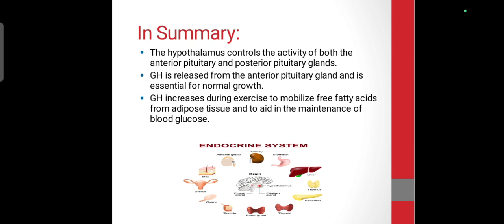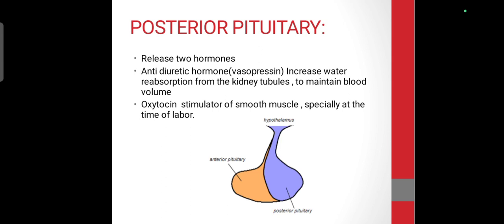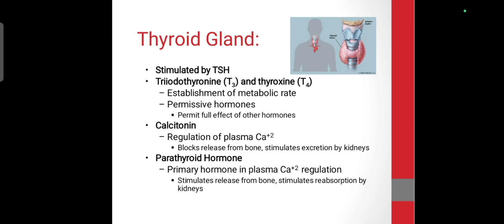Posterior pituitary hormones include: first, antidiuretic hormone (ADH), which helps maintain fluid absorption; and second, oxytocin, which is helpful in stimulating smooth muscles especially at the time of labor.